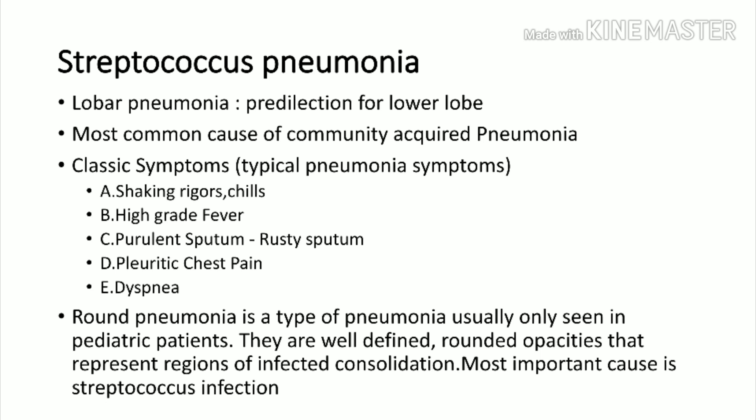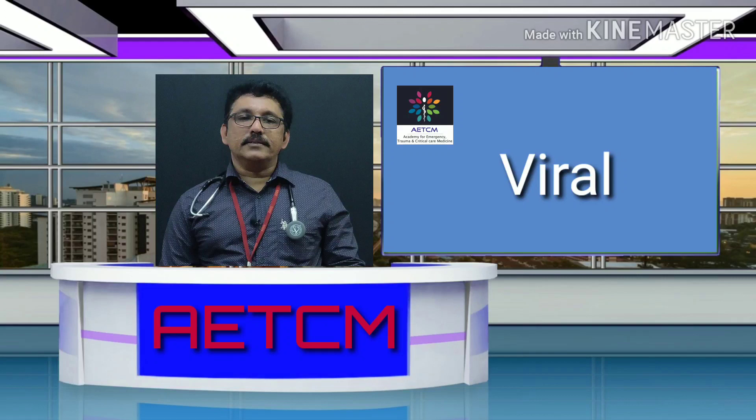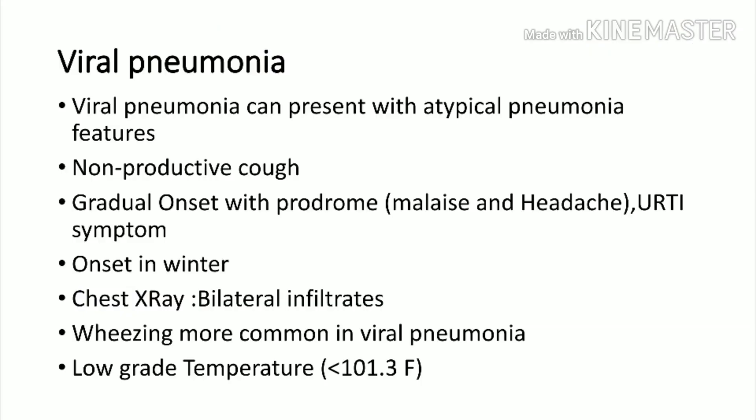Klebsiella pneumonia, as already discussed, is not very common in community acquired pneumonia, but is classically seen in patients with alcoholism and has predilection towards the upper lobe. H1N1 is a classic virus very commonly seen which produces bilateral extensive pneumonia.